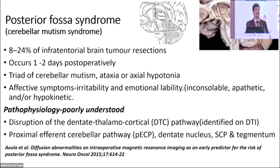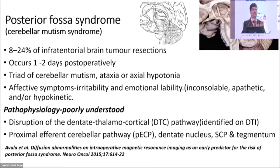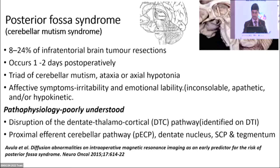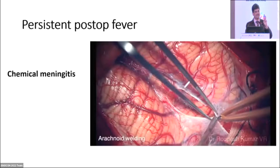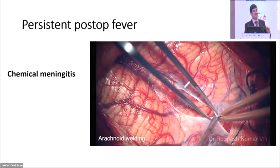Two things that can delay adjuvant therapy are posterior fossa syndrome and post-operative fever. Posterior fossa syndrome is well known but poorly understood — the key is to be cautious about retracting the dentate nucleus. We have moved from retractor-based to retractor-less surgeries, avoiding retraction of the dentate nucleus because it lies close to the midline and its manipulation causes posterior fossa syndrome. Counseling families about this complication is important as it delays recovery and worries parents greatly.